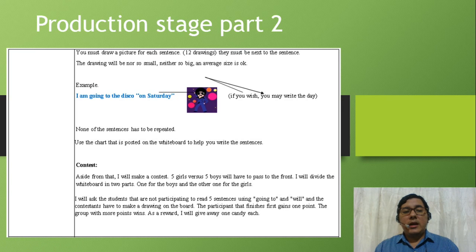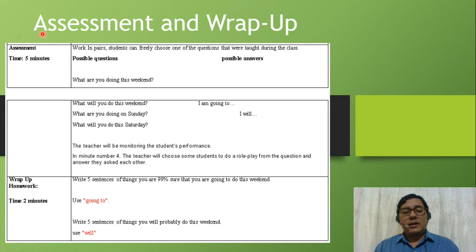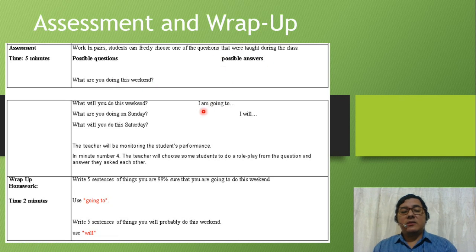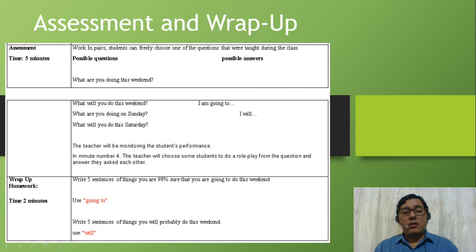Assessment and wrap-up. To evaluate if the objectives have been accomplished, students will be asking and answering in pairs. They can freely choose one of the questions. They will be asking and answering the questions that were taught during the class. You can see here the possible questions: What are you doing this weekend? And here the possible answers: I'm going to... I will assign five minutes for this activity. In minute number four, I will stop the exercise and I will choose a couple to role play the questions and answers they just practiced.